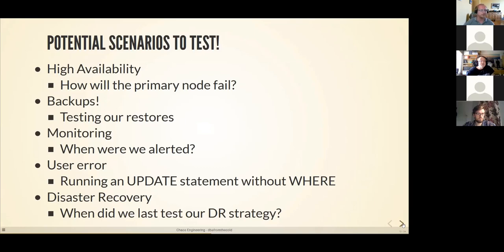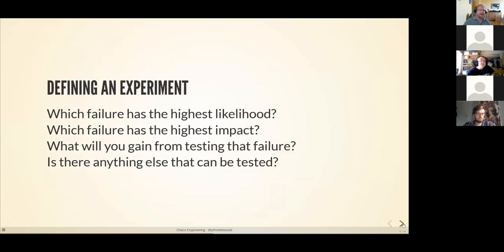Those are a whole bunch of potential scenarios we could test with our Chaos Engineering experiments. We're looking for which failure has the highest likelihood, the highest impact, and what we'll gain from testing it. If the tests pass, we've proved the systems react to failure the way we expect. If they don't, we analyze it, come up with configuration changes, deploy those changes, and run our experiments again to confirm they now react the way we want.